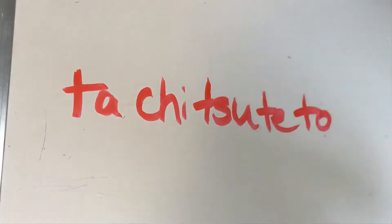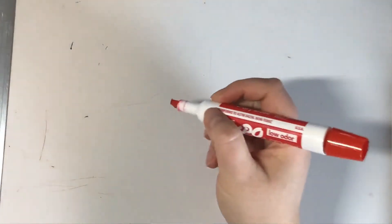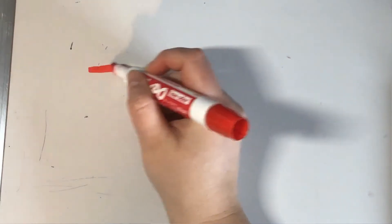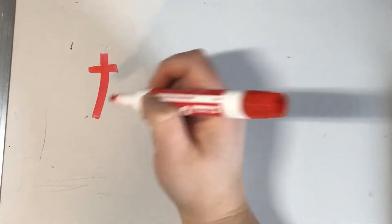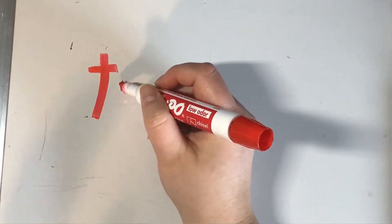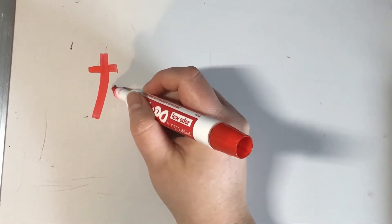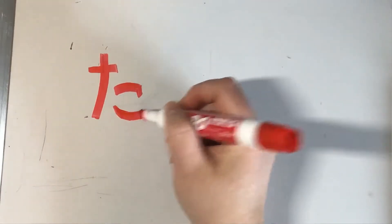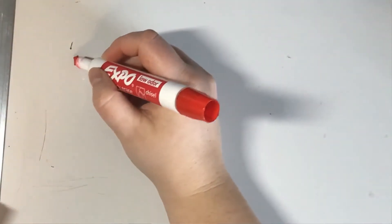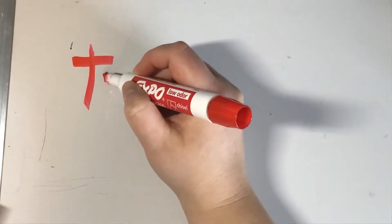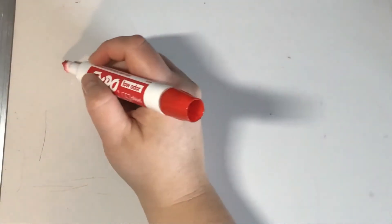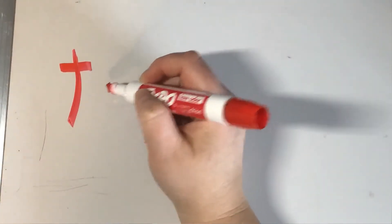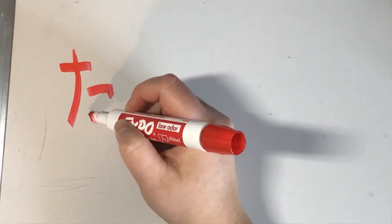The first one we're going to write is ta. Ta starts with a small line left to right, then a line that goes through top to bottom on a leftward angle. Then we add a shape beside it: a line going across the top, and a line going along the bottom with a curve. That is ta.